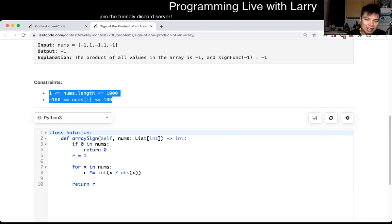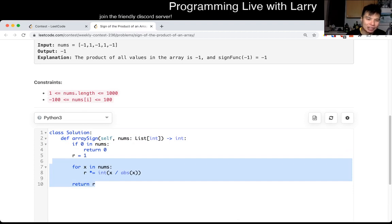What I did was that if zero is a num, that returns zero. Otherwise I just multiply it by this thing, which is either one or negative one, and then I return the answer.